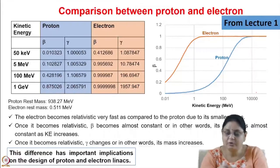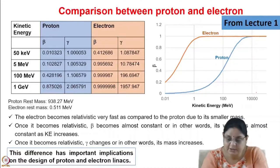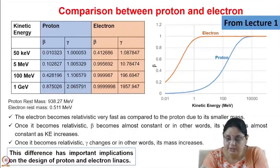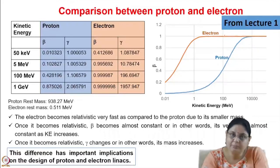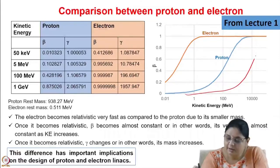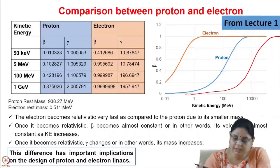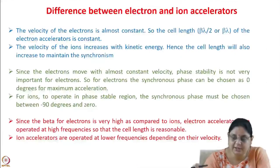Coming back to the comparison from lecture 1 between protons and electrons: the electron becomes relativistic at very low energy, approaching the velocity of light at very low energies, with velocity essentially constant thereafter and increasing mass. The proton's velocity increases until about 1 GeV and then becomes constant. Heavier ions behave similarly but with a different profile. This has important implications on the design of both proton and electron accelerators.